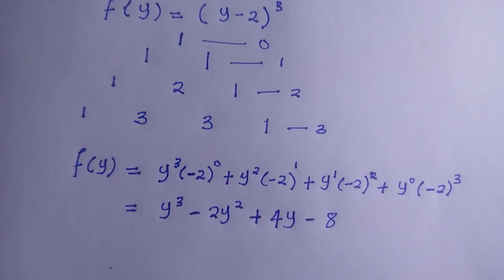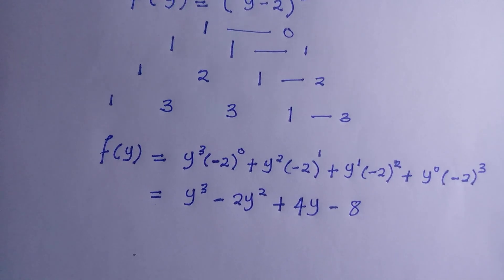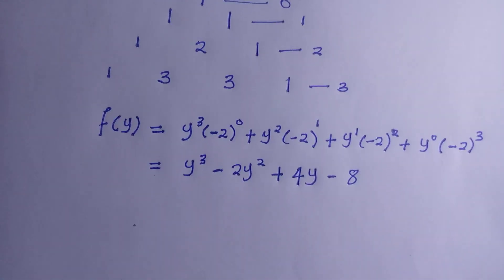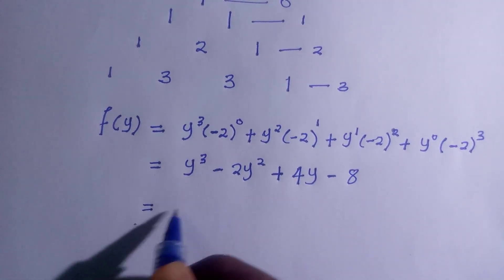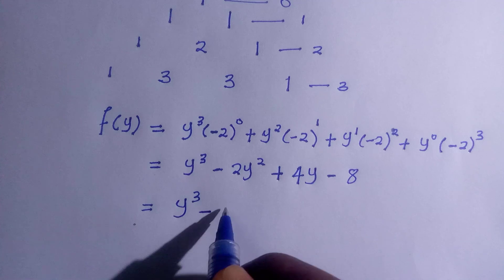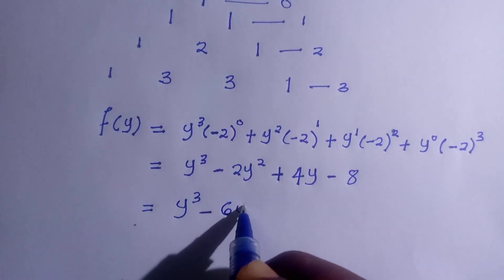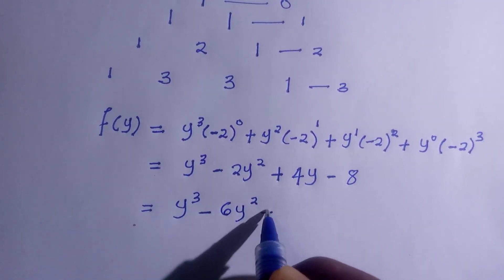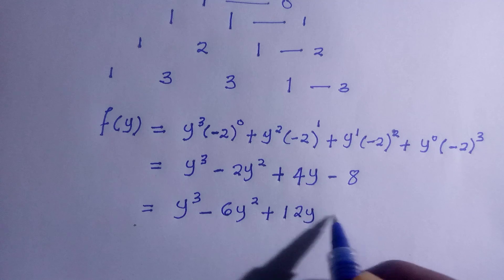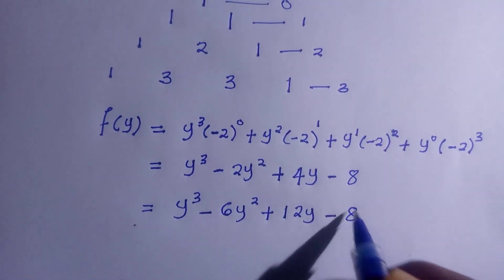So we consider this one only. Then we are going to introduce the coefficient, which is 1, 3, 3, 1. So by taking it here, we have y to the power of 3, minus 2 times 3 becomes 6y to the power of 2, plus 3 times 4 is 12y, then 1 times 8 is 8.